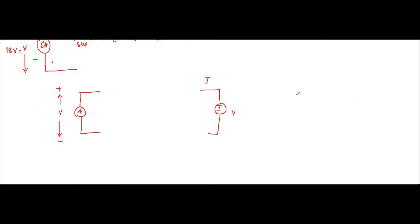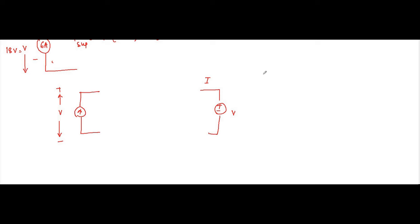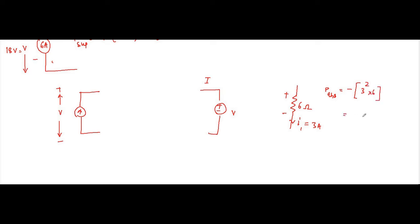For the 6 ohm resistance, current I1 = 3 ampere is flowing through it. Resistors always absorb power. Power absorbed = I² × R = 3² × 6 = 9 × 6 = 54 watts, so the power is minus 54 watts (absorbed).